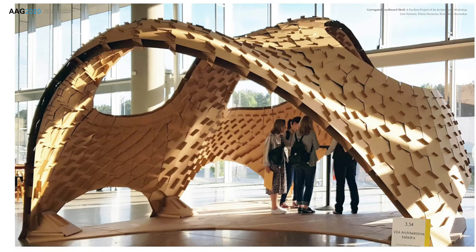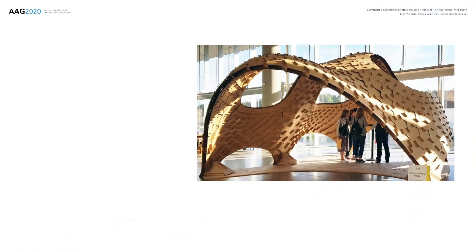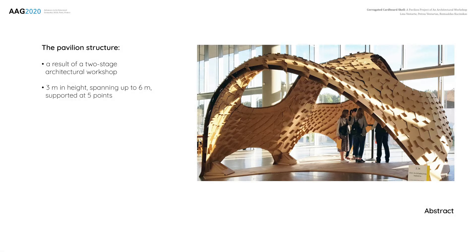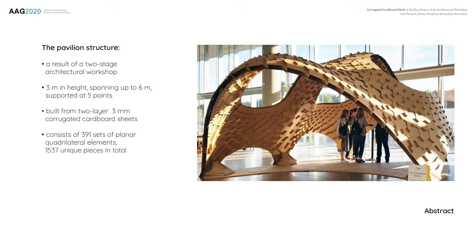The corrugated cardboard pavilion is a result of a two-stage architectural workshop. The shell is three meters in height, spanning up to six meters, and is supported at five points. The pavilion was built from three-millimeter corrugated cardboard sheets, consisting of 391 sets of planar quadrilateral elements — 1537 unique pieces in total. The structure was assembled without using heavy scaffolding or any adhesives.